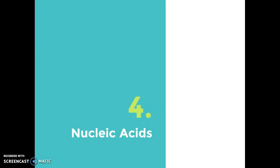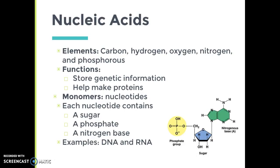The final category of organic molecules is the nucleic acids. Nucleic acids are made up of carbon, hydrogen, oxygen, nitrogen, and phosphorus. Notice that the only two groups of organic molecules with nitrogen are the nucleic acids and the proteins, which makes them easier to recognize. The phosphorus found in nucleic acids is a dead giveaway.